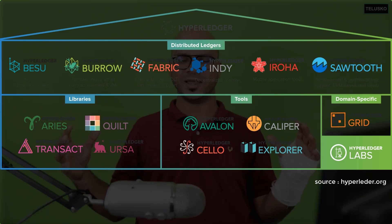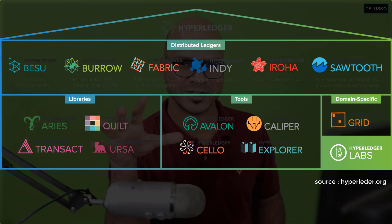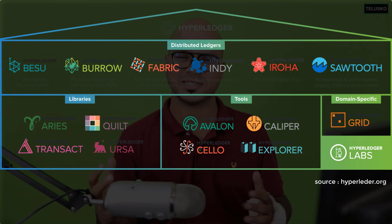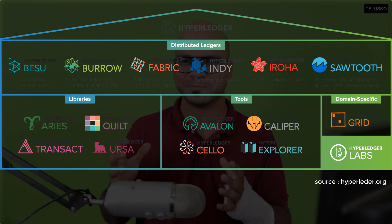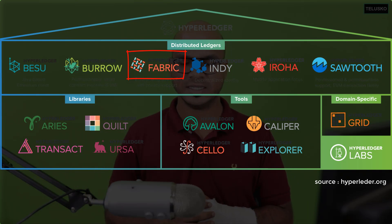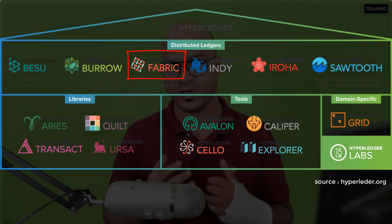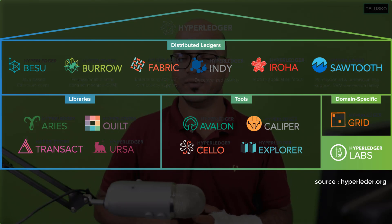Inside Hyperledger, it's a big umbrella and there are some big projects like Hyperledger Fabric and Sawtooth. Fabric is powered by IBM so it's a very big project, and it is getting a lot of fame nowadays in the blockchain industry.